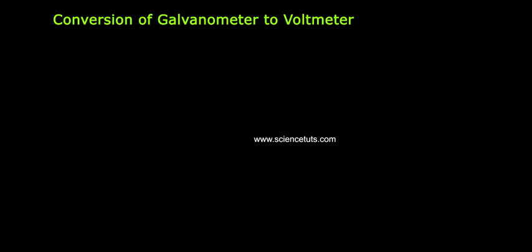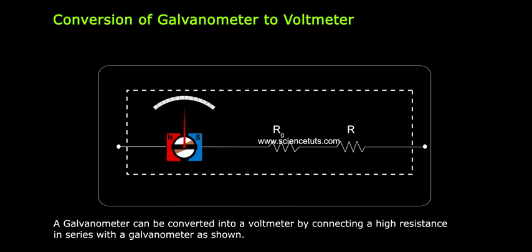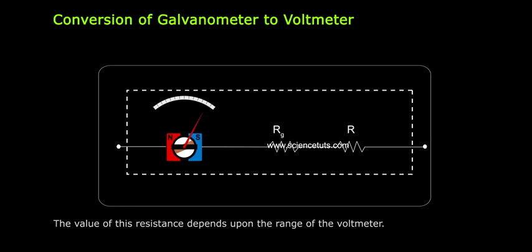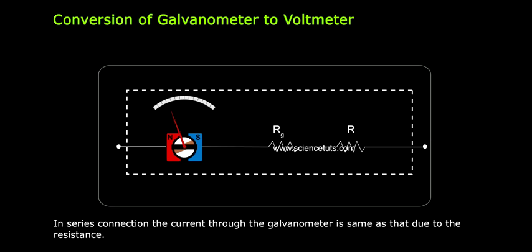Conversion of galvanometer to voltmeter. A galvanometer can be converted into a voltmeter by connecting a high resistance in series with the galvanometer as shown. The value of this resistance depends upon the range of the voltmeter.